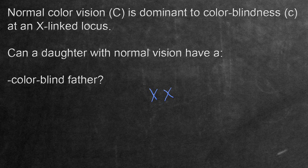Color blindness is recessive. Normal vision, the large C, is dominant over color blindness, the small c. Therefore, in order for the daughter to have normal vision, she has to have at least one big C. The other X chromosome could be either another big C or a small c. Even if it were a small c, the large C will mask the potential color blindness.